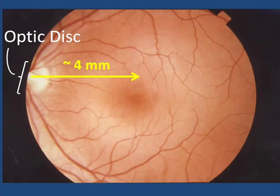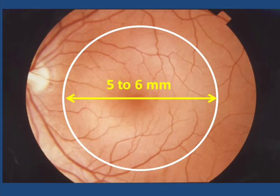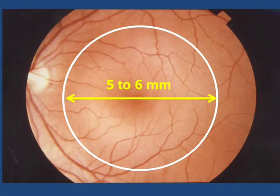An area centered about 4 millimeters over and a little less than a millimeter down from the middle of the optic disc, having a diameter of 5 to 6 millimeters — that's about a quarter of an inch — is an area anatomically known as the macula or macula lutea.